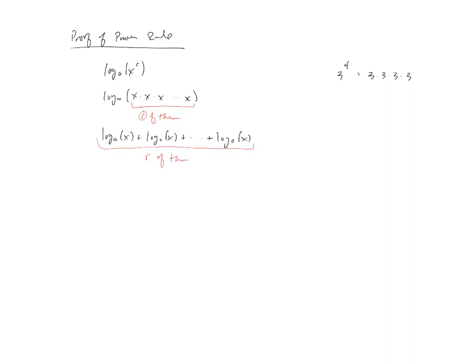Back to a simple arithmetic explanation: if we have something like three plus three plus three plus three, that's the same as four times three, because there are four of them. So in our case, we're going to have r times log base a of x. And if you look at where we started and where we finished, that's the desired result.